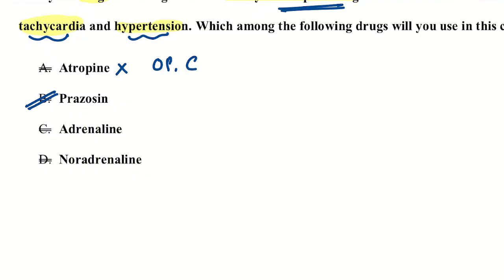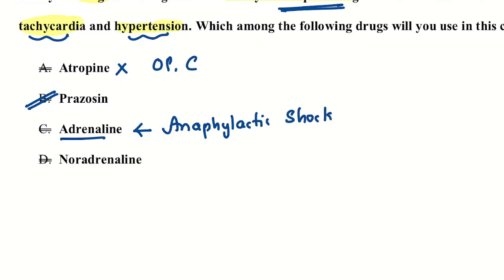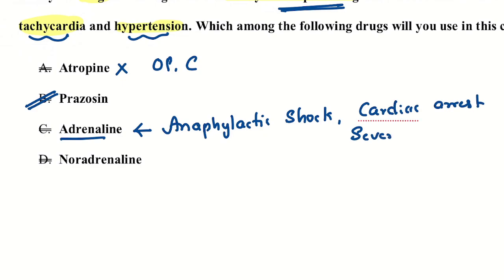Adrenaline is the drug of choice for anaphylactic shock, and we also use it during cardiac arrest and when there is severe bradycardia. These are the emergency uses of adrenaline.